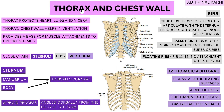Today we are going to talk about the thorax and the chest wall. First we will look at the function — the main function of your thorax and chest wall — then we will move on to the different components and see how each component is related to the others, and how if one thing goes out of place the whole chest wall is affected.